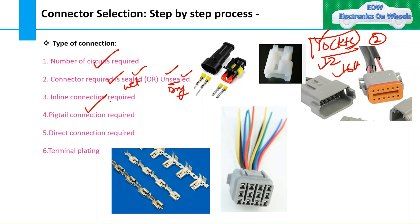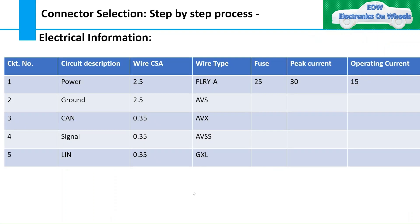You also need to determine the connection type: inline connection, pigtail connection, or direct connection. This impacts how the connector is packaged in the vehicle. Terminal plating selection — tin, gold, or silver — also factors into connector selection at this stage. This completes the connection type considerations before moving on to the electrical information.